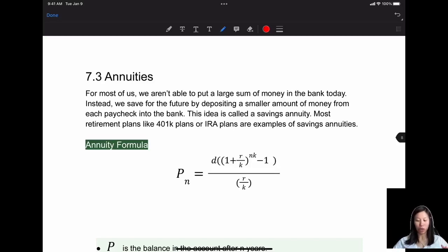Hello, in this chapter I'm going to talk about annuity. For most of us we weren't able to put a large sum of money in the bank at one time. Instead we save for the future by depositing a smaller amount of money from each paycheck into the bank. This idea is called a saving annuity. Most retirement plans like 401k or IRA plans are examples of saving annuities.